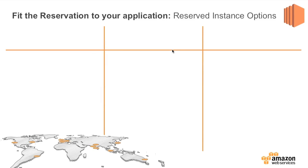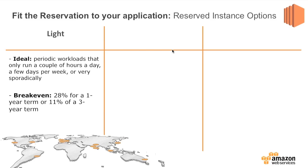It's about predictability — not necessarily an always-on workload, but being able to say: I know I will have this server on for a period of time over the next 12 to 36 months. There are three different types of reserved instances. The first is a light reserved instance, ideal for periodic workloads that only run for a couple of days or a few hours a day. The break-even point is 28% utilization for a one-year term or 11% for a three-year term — anything more than that, you're saving money and getting the capacity reservation. It's often used for DR or infrequent testing.